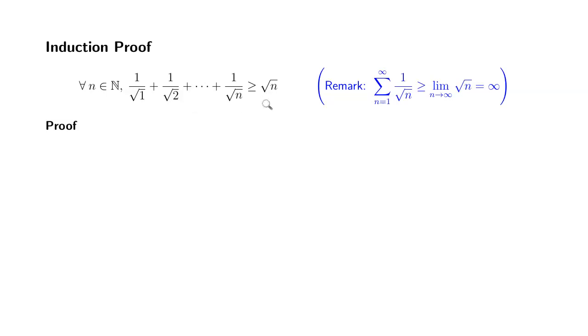So this inequality can be used to establish that the P series with P equals 1 half is divergent because this left-hand side is the partial sum of this P series and we know that as n approaches infinity square root of n diverges to infinity so therefore this P series is also divergent because it's bigger than that.